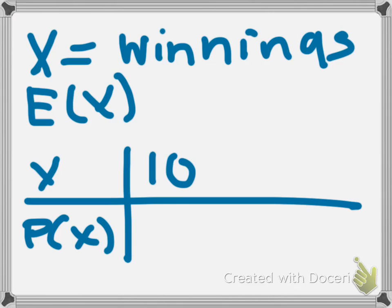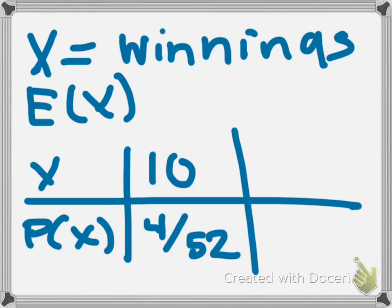We will win $10 if they pull out an ace. There are 4 aces out of 52 cards, so that's the probability. We will lose $1 if they pull out something different. So 52 minus 4 is 48. There's 48 cards other than an ace. Here's our probability distribution.